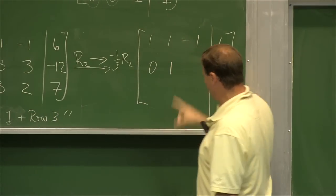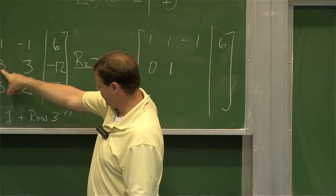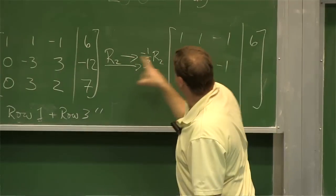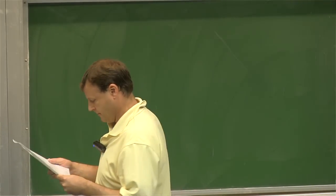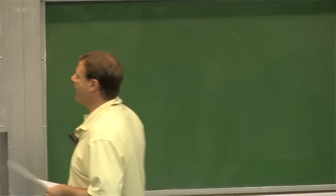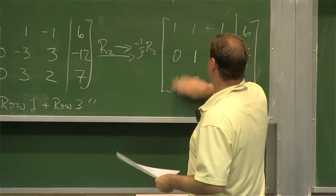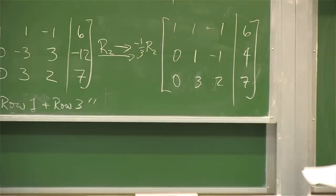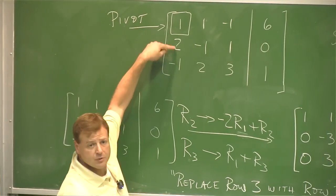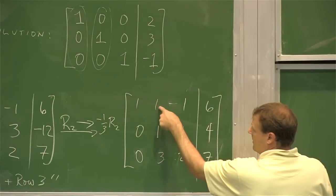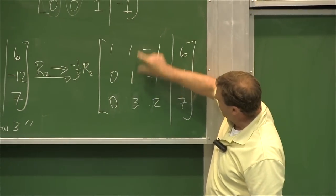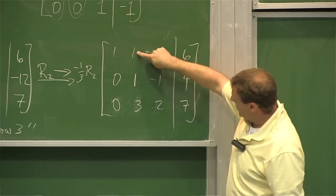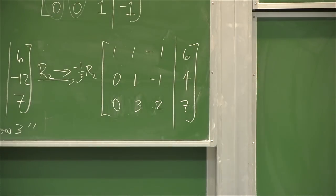My whole goal was to get a 1 here. After multiplying row 2 by negative one-third, I get 0, 1, negative 1, 4. The last row didn't change. Now let's use this new 1 as our next pivot to eliminate the entries above and below it. Notice this won't disturb the zeros we already created — I'll be adding multiples of the new row 2, and wherever there's already a 0, nothing changes.